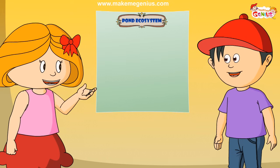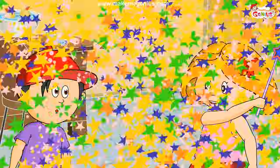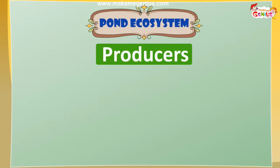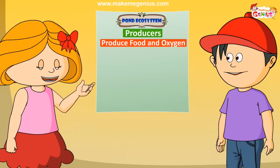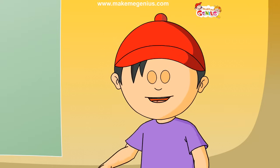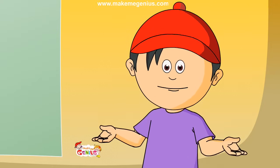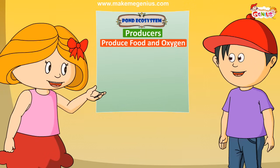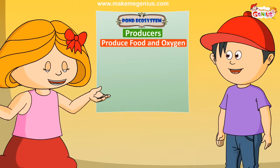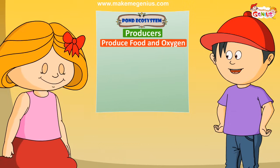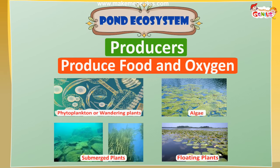Let's first make the chart about producers. What is the work of producers? Producers prepare food for consumers. They also produce oxygen so that the animals living in the pond can breathe. Can you name a few producers of a pond ecosystem? In every aquatic ecosystem — aquatic means water related, like pond, sea, river, oceans — every aquatic ecosystem has three or four types of producers: phytoplankton, algae, and plants. Some plants are underwater and few of them float over the water.